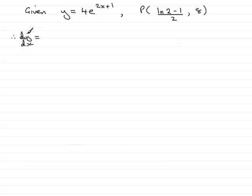This will give us the gradient in general. To differentiate y equals 4e to the 2x plus 1, I'm going to need to use the chain rule.